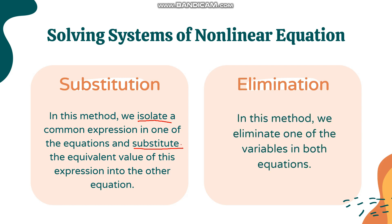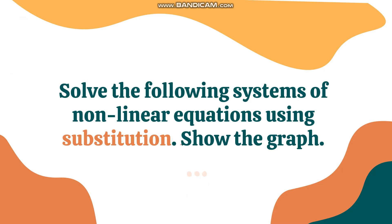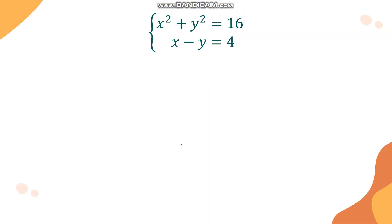In the elimination method, we eliminate one of the variables from both equations. The terms must have the same variable and the same numerical coefficient but with different signs, so that when added they cancel out.